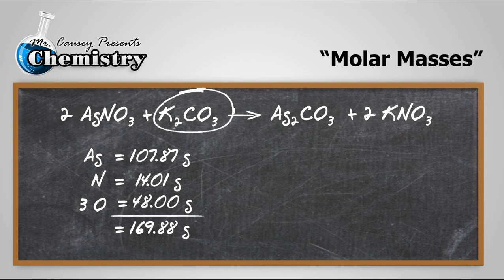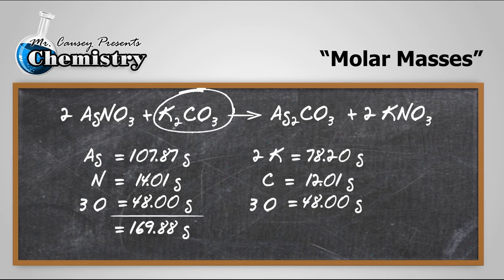Now let's go over to the potassium carbonate and do the same thing. Go to our periodic table, and there are two potassium, there's one carbon and three oxygen. Add all those up, and we now have our two molar masses. Let's move to the next step.